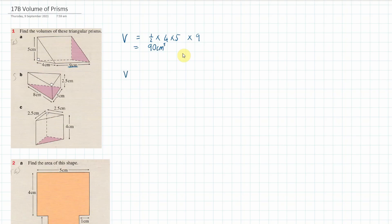For 1b, we find the area of the triangle — half times the base times the height — looking at the purple triangle, then multiply by the length of the prism which is 2.5. Now, you can swap things around: rather than doing half of 3, I'll multiply the half by 8 first, because when you have a bunch of things multiplied together you can rearrange the order. Half times 8 gives 4.